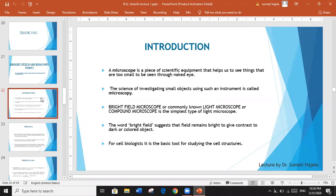Introduction. A microscope is a piece of scientific equipment that helps us to see things that are too small to be seen by naked eyes. The science of investigating small objects using such an instrument is called Microscopy. The first such instrument we are going to see today is Bright Field Microscope, which is also commonly known as Light Microscope or Compound Microscope, and this is the simplest type of Light Microscope.